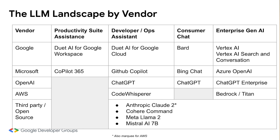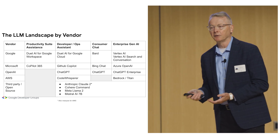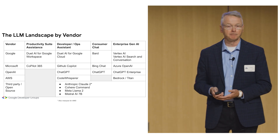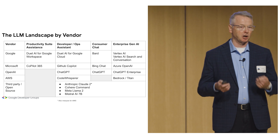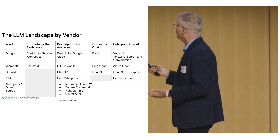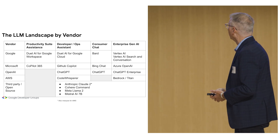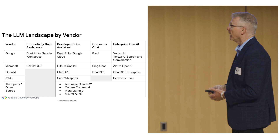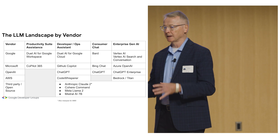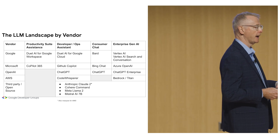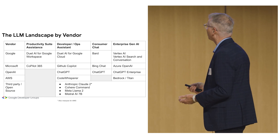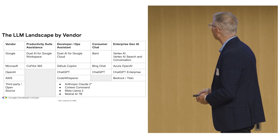This is a way to look at the landscape by vendor. People often ask, is BARD like ChatGPT, and where does CodeWhisperer fit? There's the idea of productivity suite assistance — Duet AI for Google Workspace and Copilot 365 are examples for word processing and spreadsheets. Developer help — Duet AI in Google Cloud and GitHub Copilot for turning text into code and explaining code. Consumer chat — BARD is an example. And AI development environments with access to large language models and augmented features for creating AI-based applications — Vertex AI, Azure OpenAI, and ChatGPT Enterprise are examples.